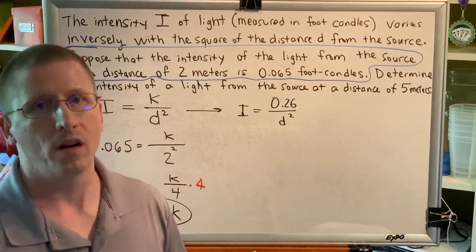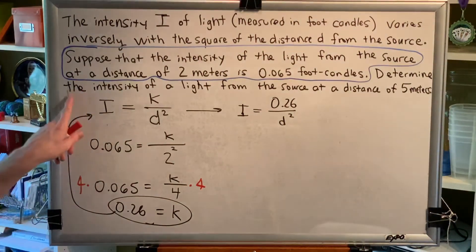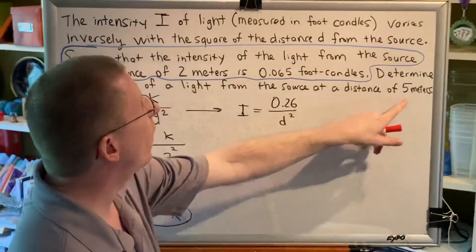This is an equation that tells me the relationship between light intensity and distance. If I know one, I can find the other. So, now here comes the part where we can predict the future.